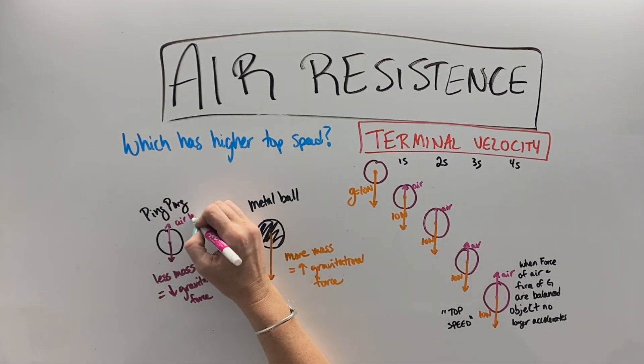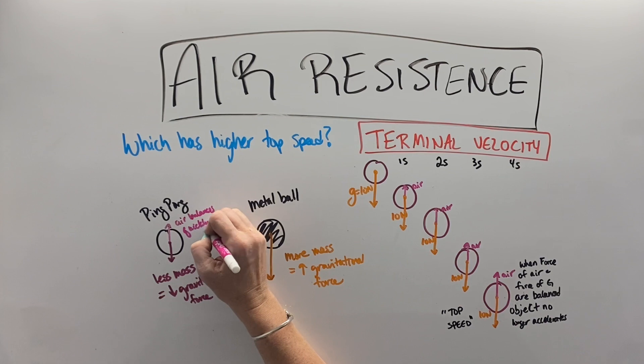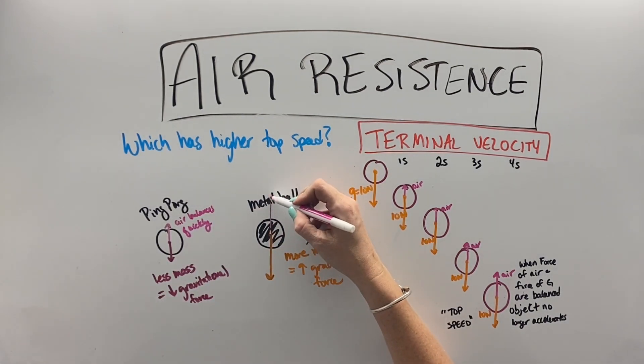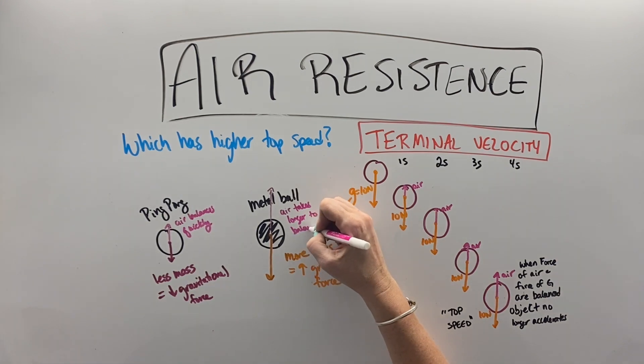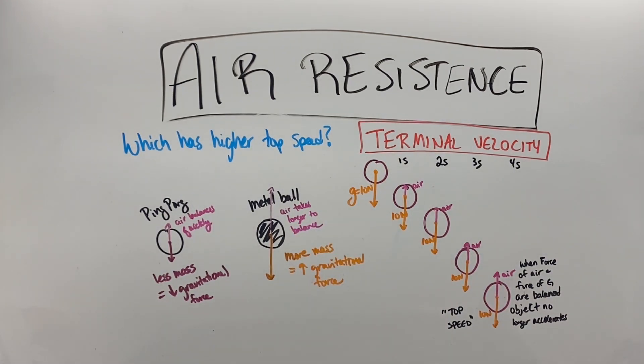So the metal ball is going to hit the ground first and will have a higher top speed, and the ping pong ball will hit the ground later and have a lower top speed because there's just going to be more air resistance faster on the lighter object.